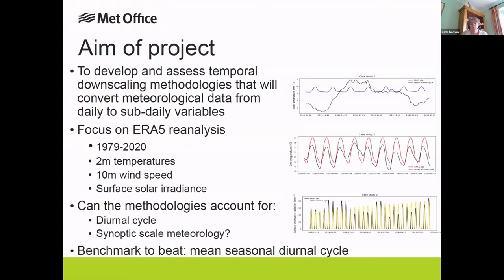The aim of the project was to develop some data scaling techniques from daily data to hourly data. We were going to use the ERA5 reanalysis data, which was available from 1979 to 2020, and the variables that we are interested in downscaling were the two-meter temperatures, the 10-meter wind speeds, and the surface solar irradiance. This is more a downscaling methodology than a prediction methodology, so we could use information about the days in the past as well as the days in the future.